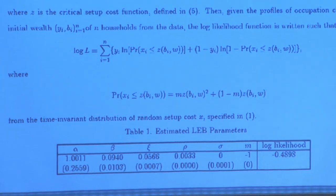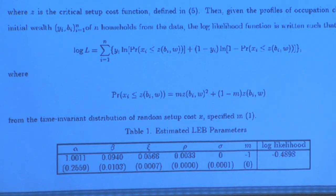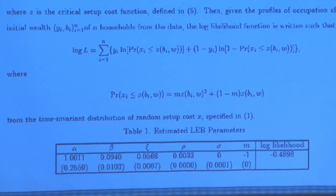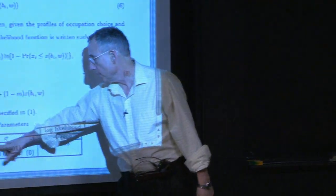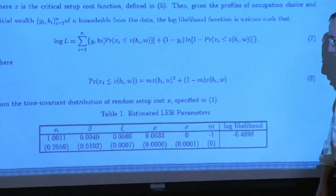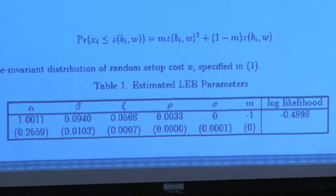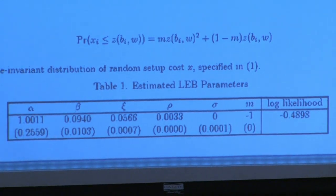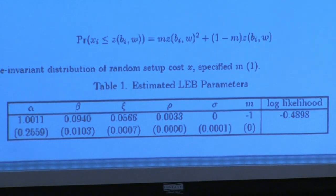For a given guess about the parameters, you'll have a certain value for the log likelihood, and you maximize that log likelihood by choosing those parameters. Essentially, the data come first — you have wealth and you don't see talent, which is an unobservable, but you do see their occupation. So you're moving those curves around to try to fit as many data points as possible. Here are the estimated parameters: alpha, beta, xi, rho, sigma, et cetera. M is also estimated naturally, because it's telling you whether there's a large mass of high or low cost people in the population.